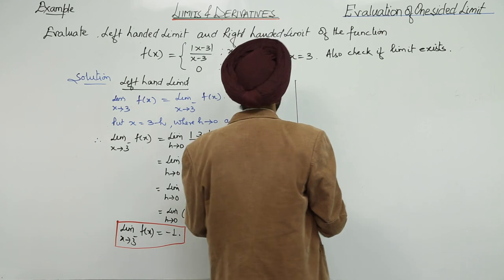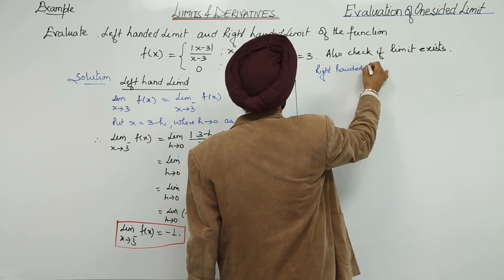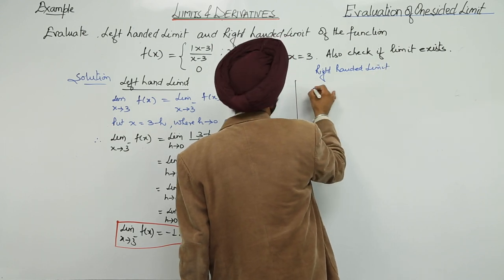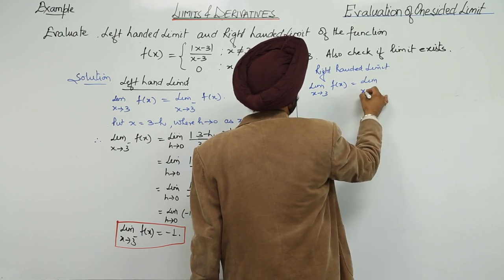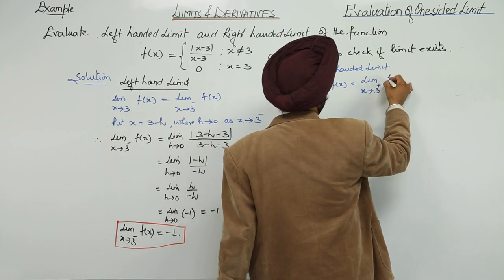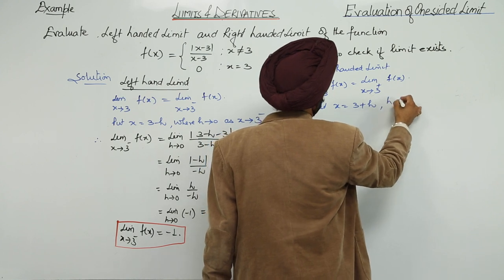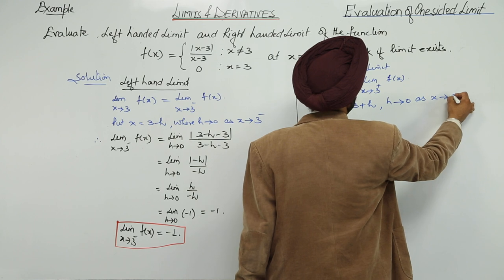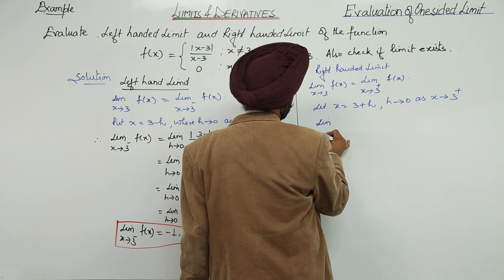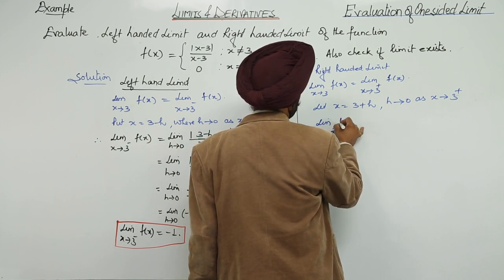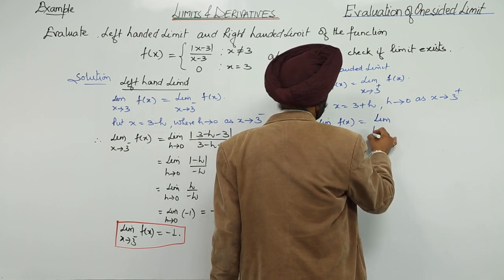Now for the right-hand limit: limit as x approaches 3 from the right of f(x). Let x equal to 3 plus h, where h approaches 0 as x approaches 3 from the right. So limit as x approaches 3 positive of f(x) equals limit as h approaches 0.